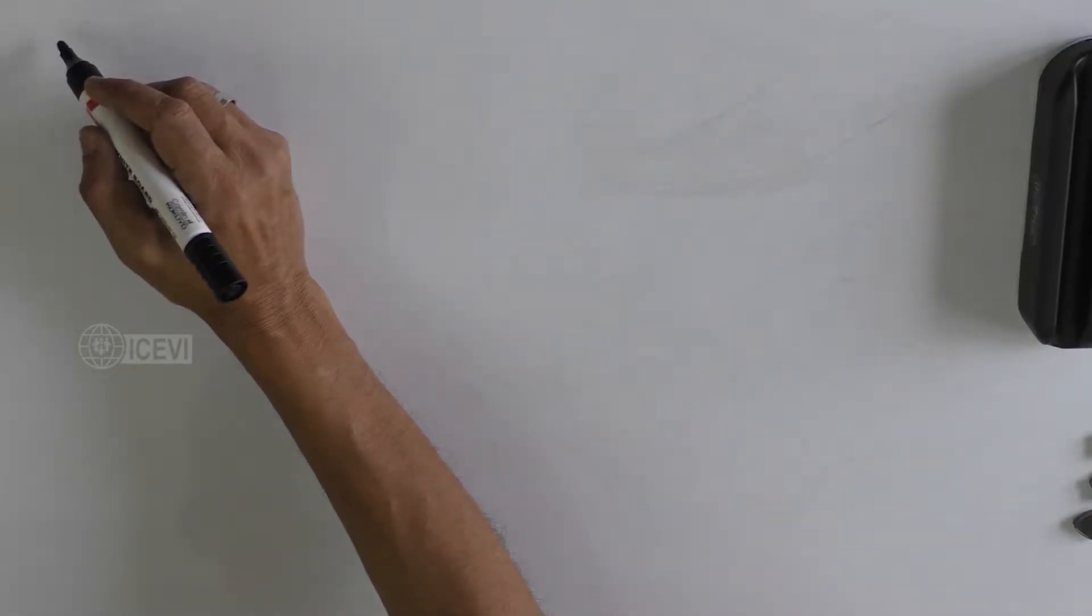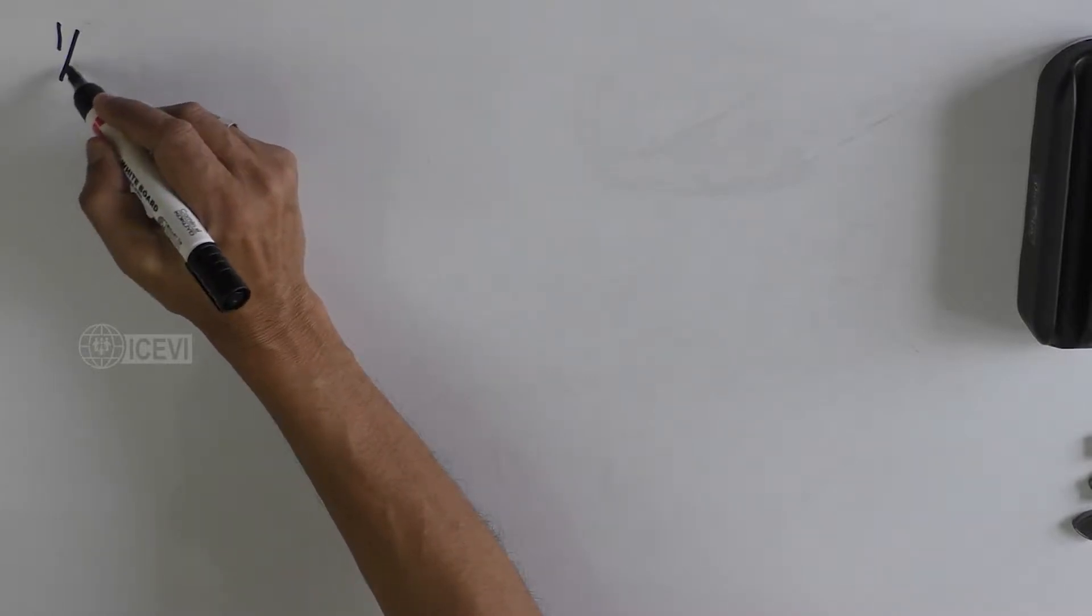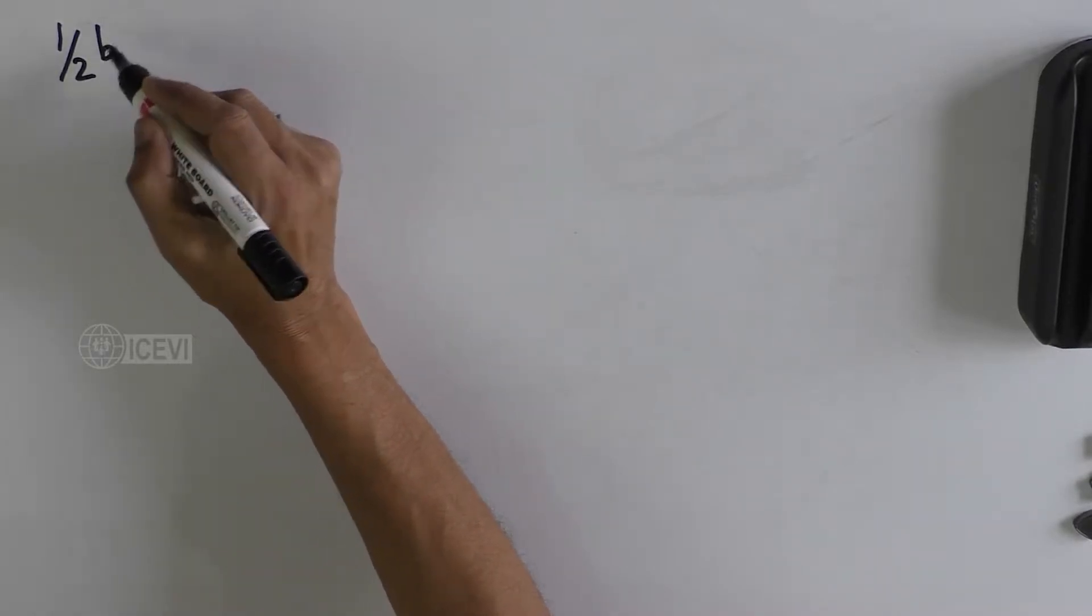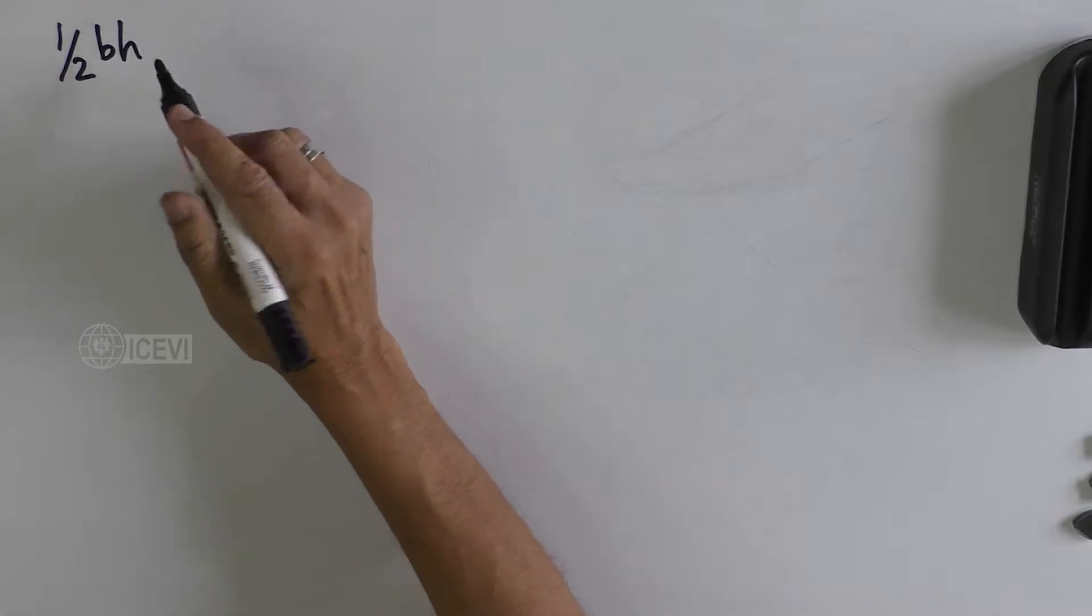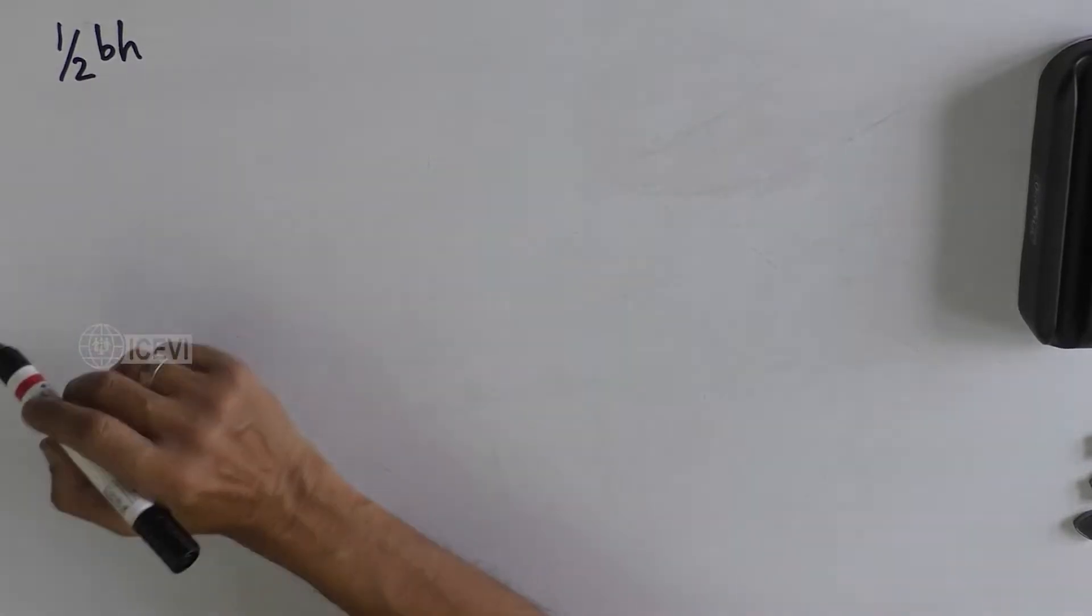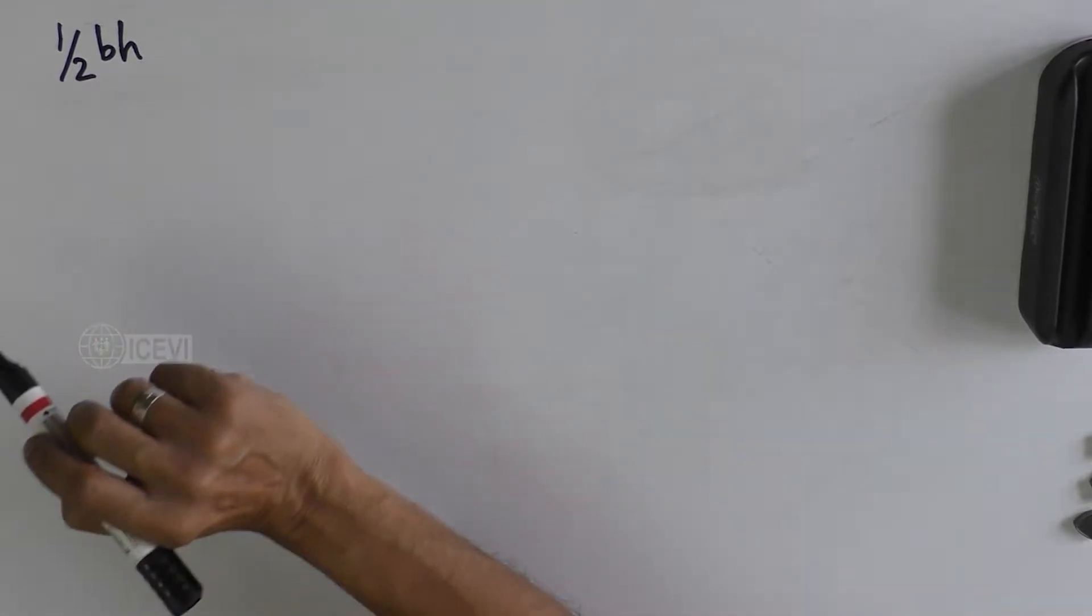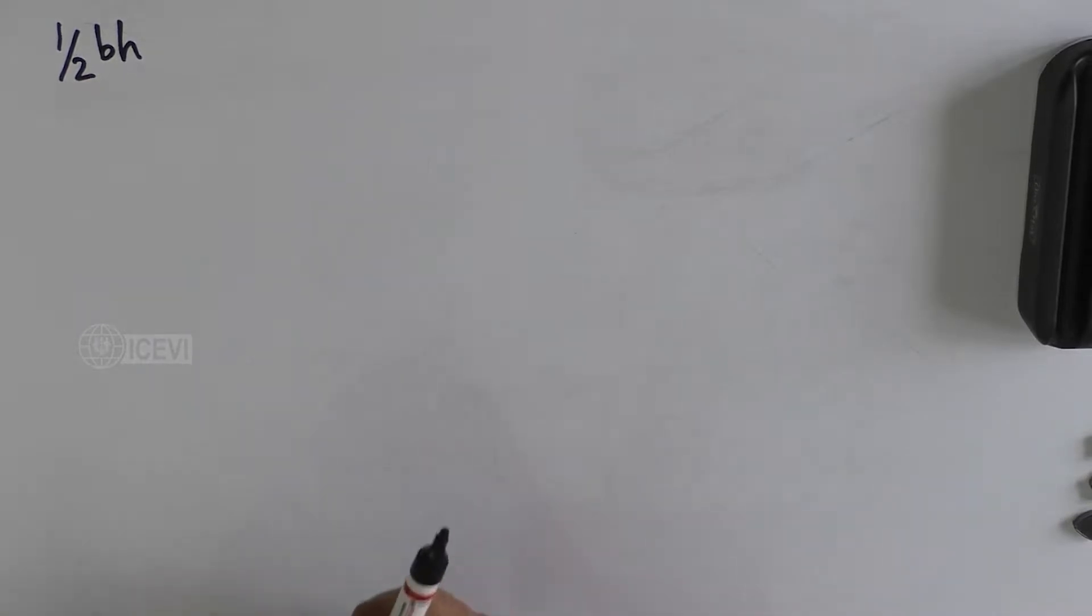We say that the area of the right angle triangle is half BH, where B is the base of the triangle and H is the height of the triangle. Let us help the child to understand how this formula has come up.